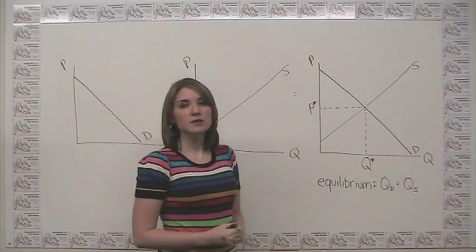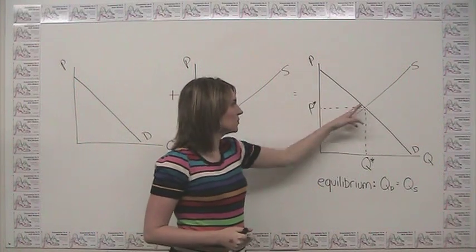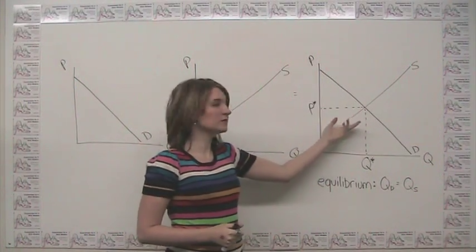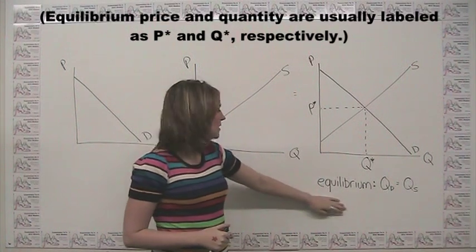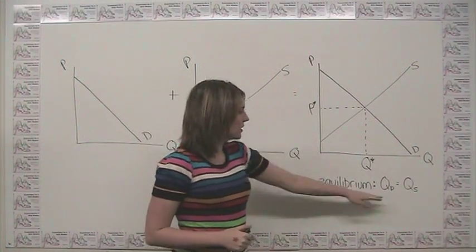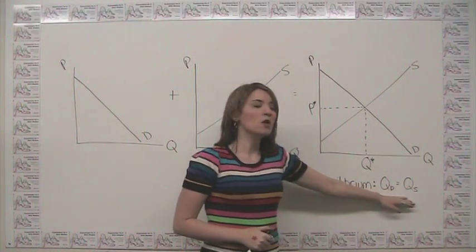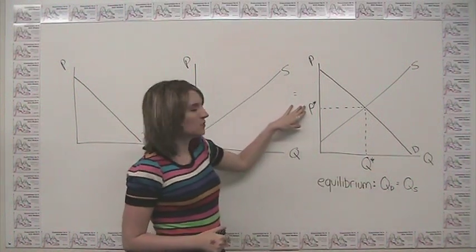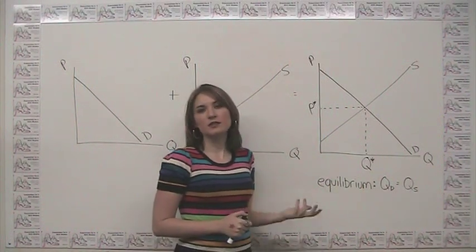Finding the equilibrium price and quantity graphically is very simple. We just want to find where supply and demand intersect. Our equilibrium condition mathematically is that at equilibrium, the quantity demanded and the quantity supplied are the same. What that means is that at this equilibrium price, everybody that wants to buy something can and there's nothing left over.